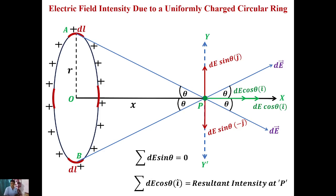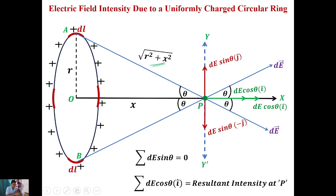Now we calculate the magnitude of the electric field intensity at point P due to the whole circular ring. The distance from A to P is required. O to P distance is x, O to A radius is R, so the distance AP will be √(R² + x²).